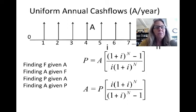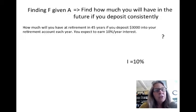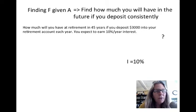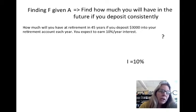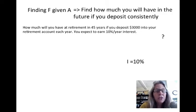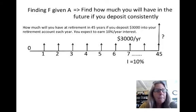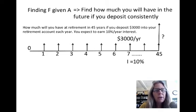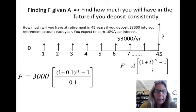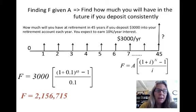Let's go through an example for finding F given A. How much will you have at retirement in 45 years if you deposit $3,000 into your retirement account each year and expect to earn 10% interest? Using the equation F equals A times (1 plus I to the N minus 1) over I, and plugging in the values, you'll have $2.1 million — that's a lot of money!